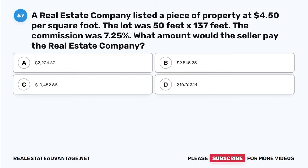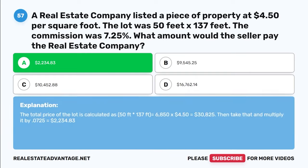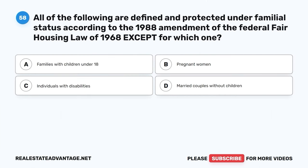Question 57. A real estate company listed a piece of property at $4.50 per square foot. The lot was 50 feet × 137 feet. The commission was 7.25%. What amount would the seller pay the real estate company? A. $2,234.81. B. $9,545.25. C. $10,452.88. D. $16,762.14. The correct answer is A: $2,234.81. The total price: 50 × 137 = 6,850 sq ft × $4.50 = $30,825. Commission: $30,825 × 0.0725 = $2,234.81.